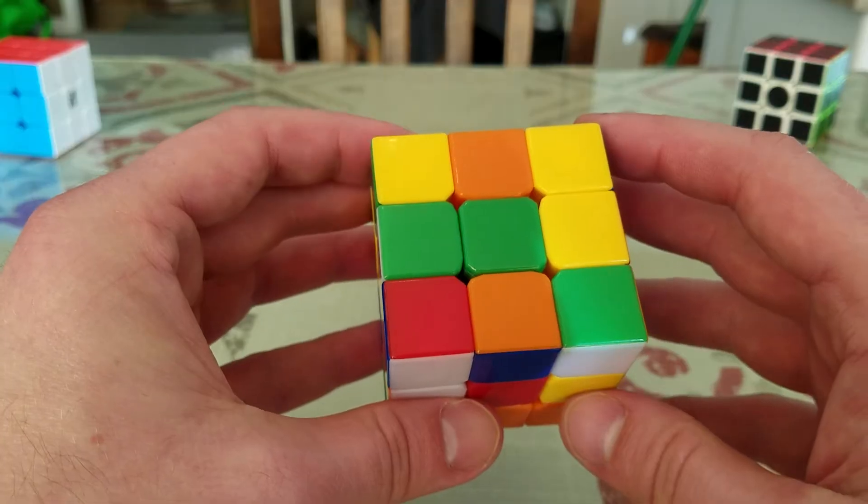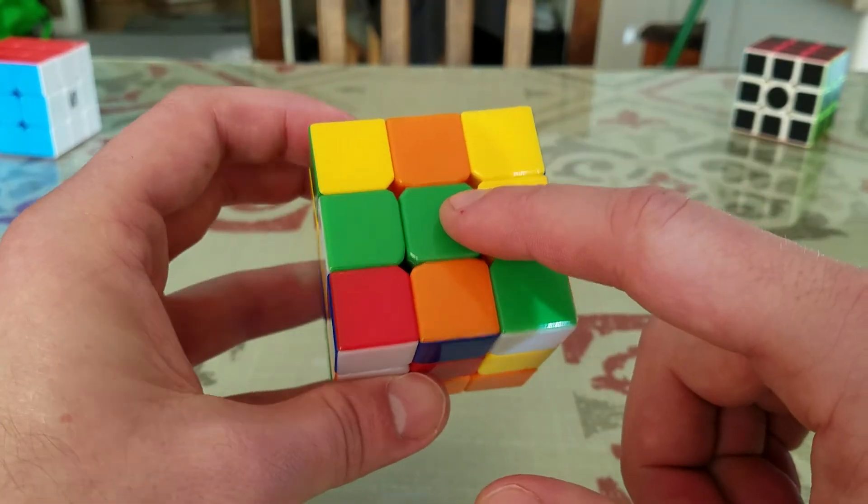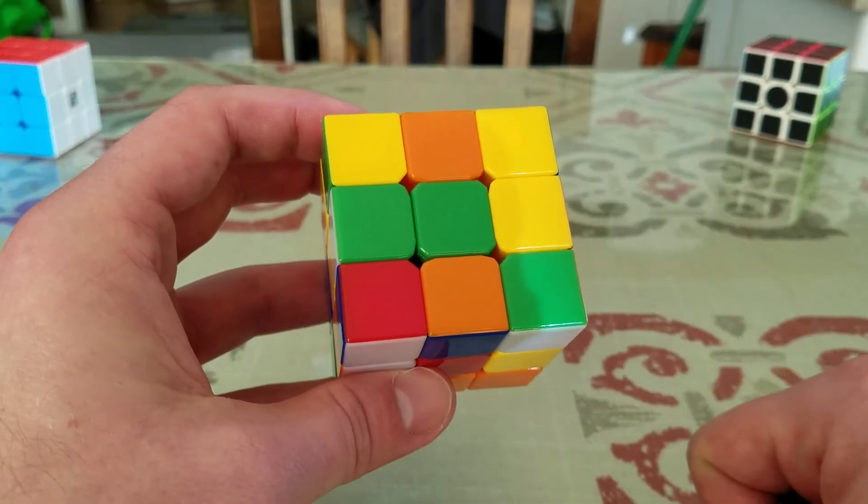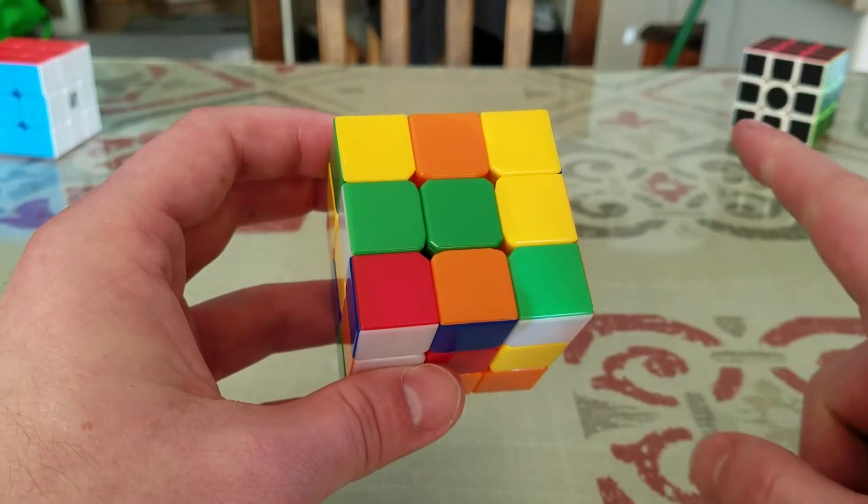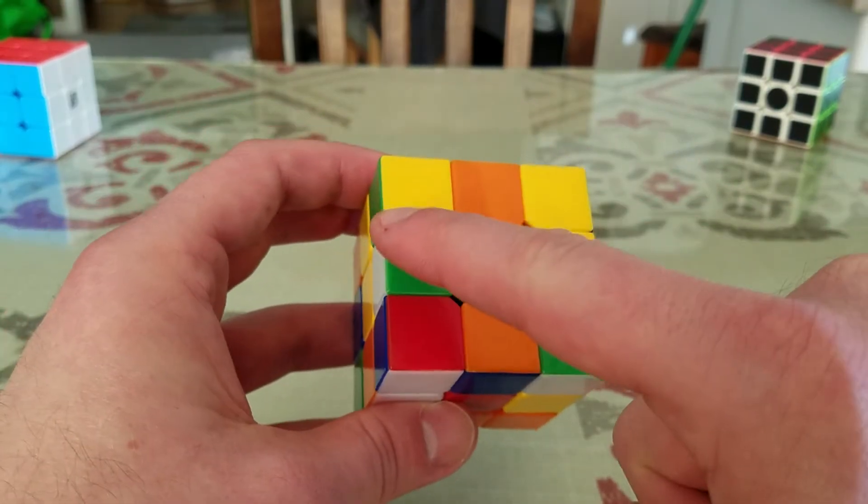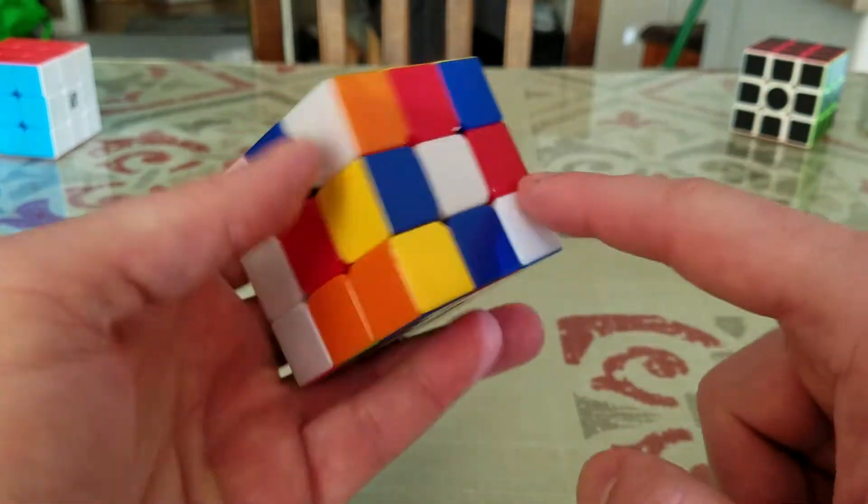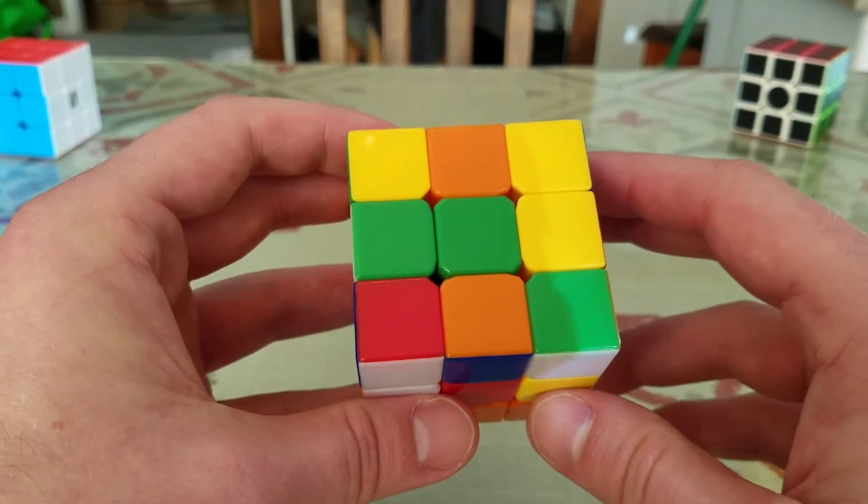So I've always learned to start with the green side. Locate the green center of your Rubik's Cube and we're going to focus on that side. For this step, we only need to worry about creating a green cross, down and across. We do not need to worry about any corners or any other parts of the Rubik's Cube.